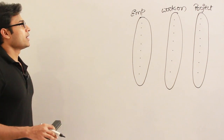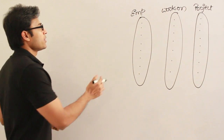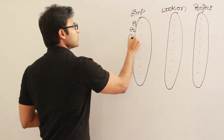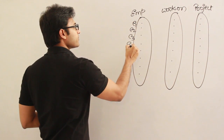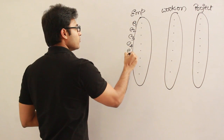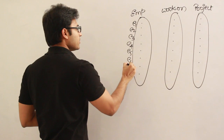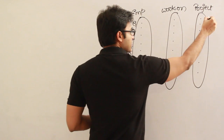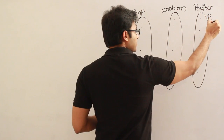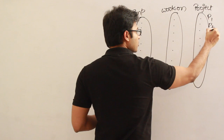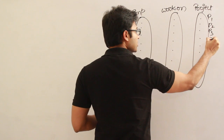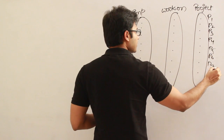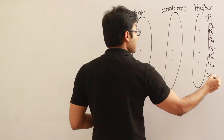Let us say the employees are E1, E2, E3, E4, E5, E6, E7, and E8. And the projects are P1, P2, P3, P4, P5, P6, P7, and P8.